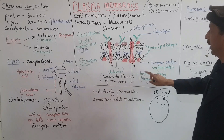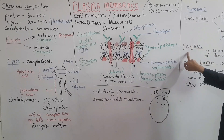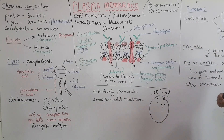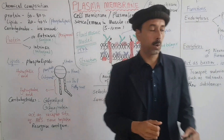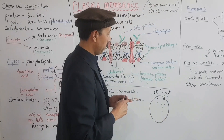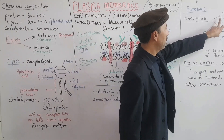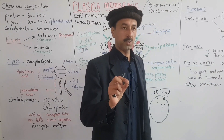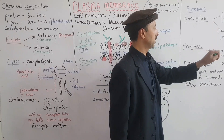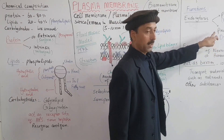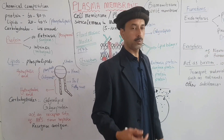Another function of the cell membrane is Endocytosis and Exocytosis. Endo means inside — when material enters the cell, it is called Endocytosis. There are two types: Phagocytosis, which is the eating of solid particles by the cell, and Pinocytosis, which is the drinking of liquid material by the cell.